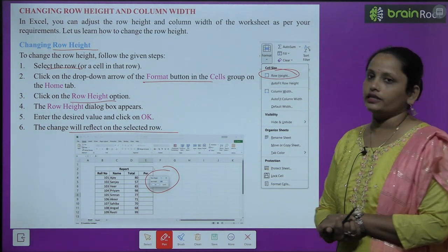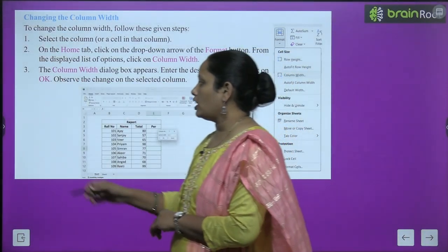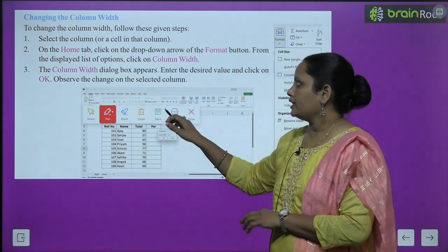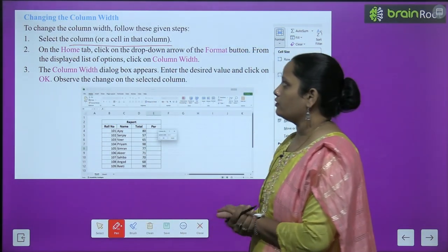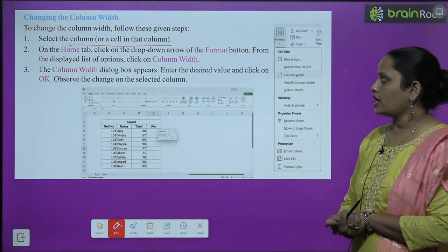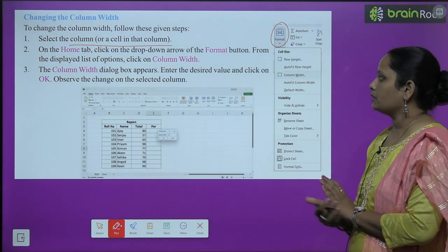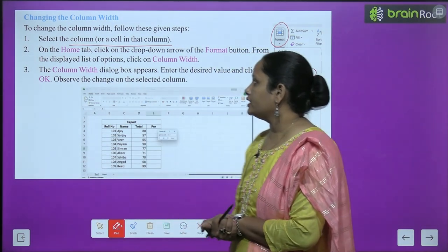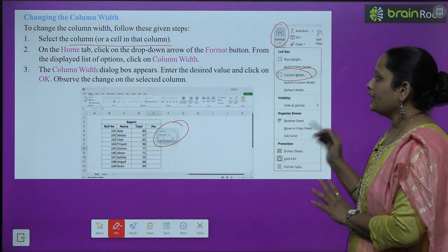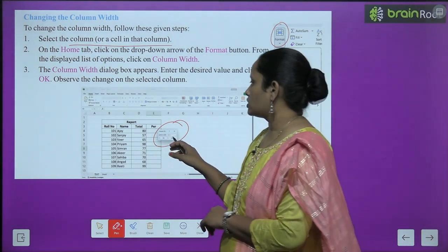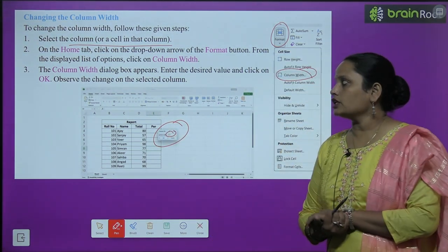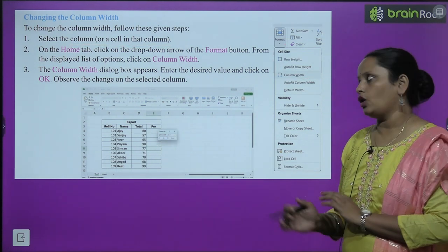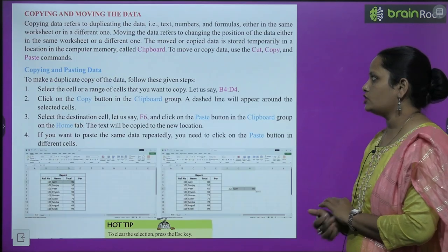To change the column width, select the column whose width you want to change. Go to the Format button on the Home tab and click the drop-down arrow. Choose 'Column Width.' The Column Width dialog box will appear — enter the desired value and click OK. The width of the selected column will change accordingly.